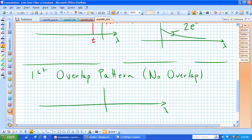That's the overlap pattern when there really is no overlap. Here's our axis for lambda. We have our impulse response, 2 e to the minus 2 lambda.